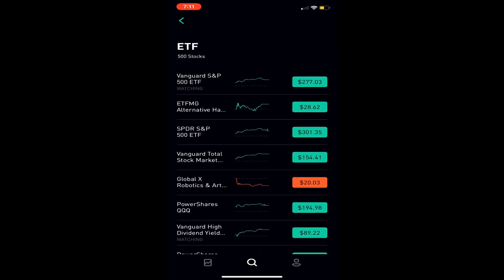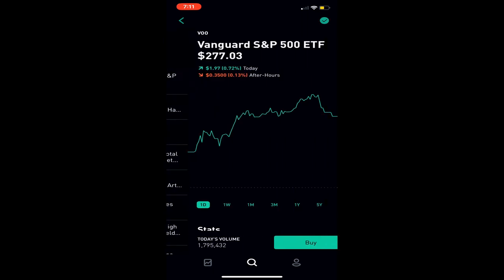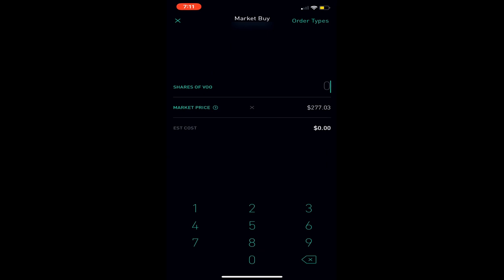So let's say we want to buy the Vanguard S&P 500 ETF at the top of the screen. We'll click on it, hit the green buy button, and this screen will tell us the current market price that those ETF shares are at. So if we want to buy one share of the Vanguard S&P 500 ETF, it'll cost us $277.03.